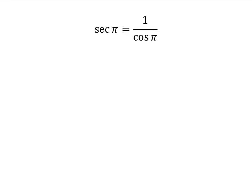As we know, secant of theta is equal to 1 upon cosine of theta, so secant of pi is equal to 1 upon cosine of pi.